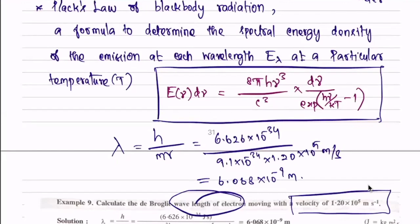Example 10. A body of mass 1 kg moving with a velocity of 2000 meters per second. The mass is 1 kg and the velocity is 2000 m/s. We have to calculate the De Broglie wavelength. Calculate this in 2 minutes.